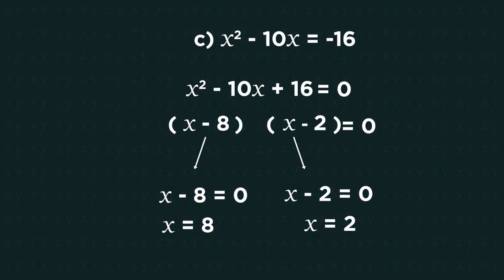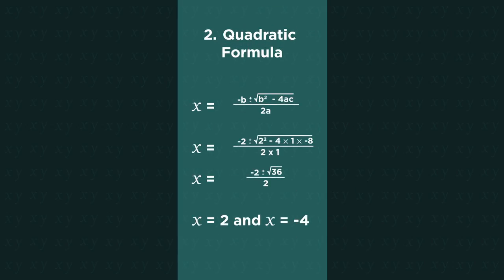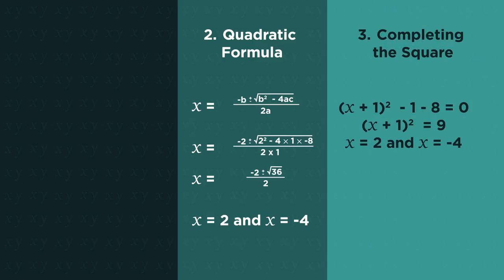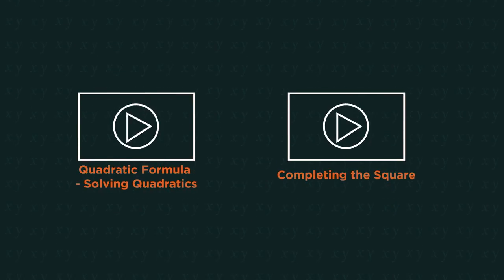So that is how we solve quadratics by factorising. Make the quadratic equal to zero, factorise it and then solve each bracket separately. Not all quadratics factorise, which is why we can also solve them using the quadratic formula or by completing the square. Watch these videos to discover how.